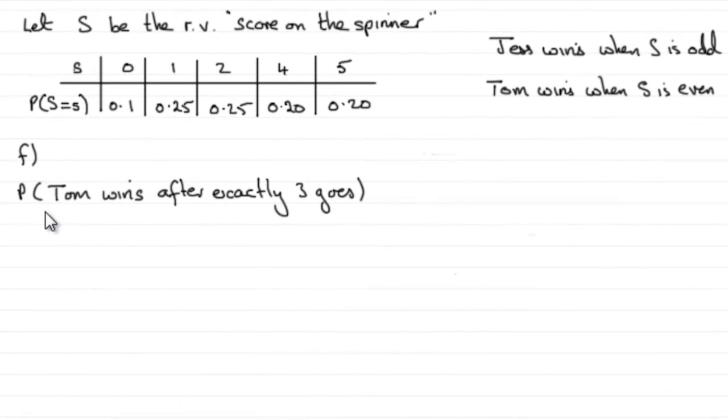Now for part F, we're asked to find the probability that Tom wins after exactly three goes. So if we've got three goes now, we're looking to get more than or equal to 10 when S is an even number.